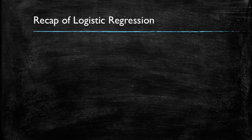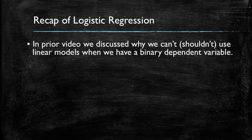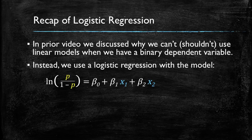Let's start with a recap of what we had learned about logistic regression. In the prior video, we had discussed why we can't, or at least shouldn't, use linear models when we have a binary dependent variable. We had found that our forecast would be outside of the range of probabilities, that is from 0 to 1. To fix this, instead, we use a logistic regression model. We have the log of p over 1 minus p as the dependent variable, and the remainder of the expression looks like a linear model.